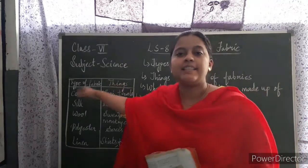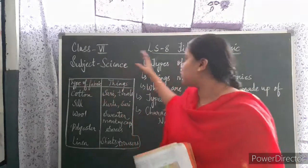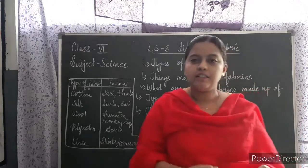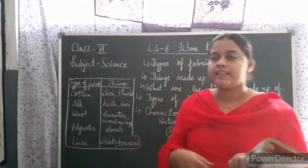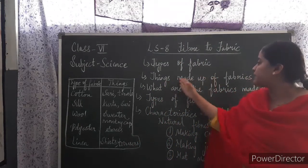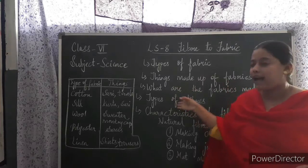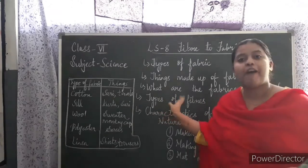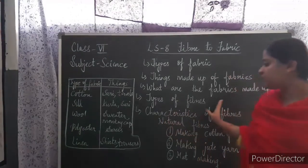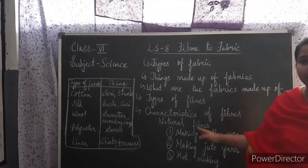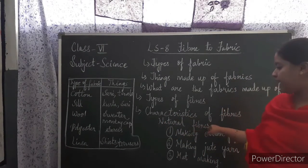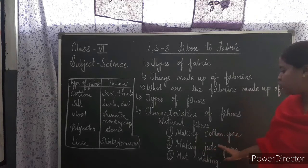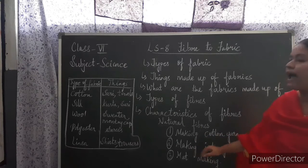Today's topic is Lesson Number 8: Fiber to Fabrics. The contents of this lesson are: types of fabrics, things made up of fabrics, what are the fabrics made up of, types of fibers, characteristics of fibers, natural fibers, making cotton yarn, making jute yarn, and mat yarn.